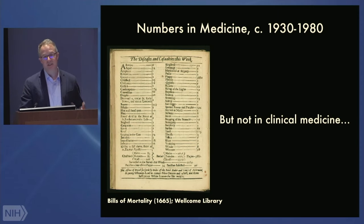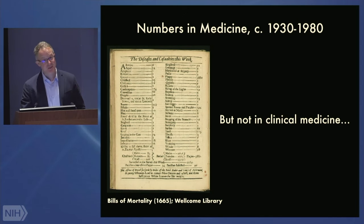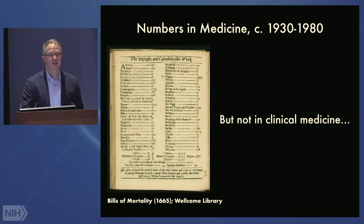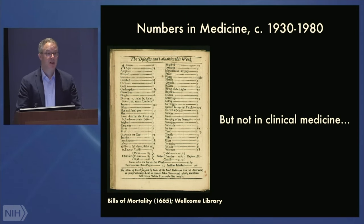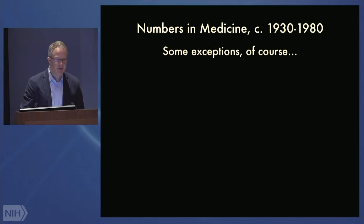When you went to the doctor and were told a therapy has a 90% chance of working, that's not actually useful to you. What's useful is whether you're in the 90% or the 10%. The very things statistics are good at are the very things you don't necessarily care about when you're sitting in front of a doctor in the clinic. So formal statistics had almost no place in medical training or medical journals. There are, of course, some exceptions as any historian would say.